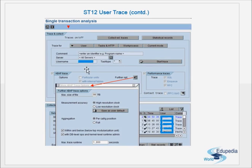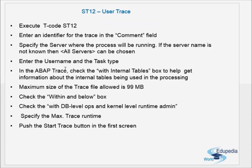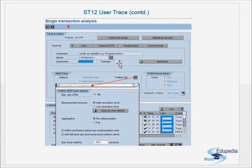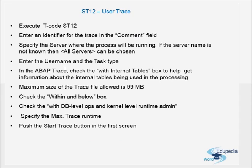Enter the user name. If it's a batch job, it will be running on a generic user ID. If we want to trace a particular user, we use user trace. In other cases, we go for the work process trace. For the task type, we generally give star, because we don't know whether the program will do dialogue tasks, update, or background.